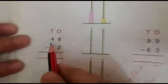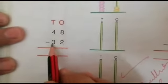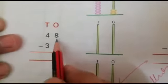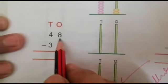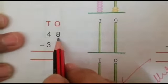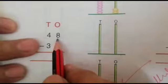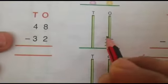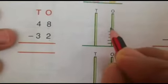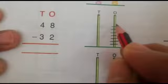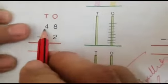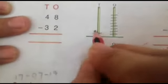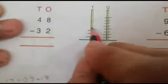Next 48 minus 32. First we will draw the beads which are in 1s place. 8. 1, 2, 3, 4, 5, 6, 7, 8. And how many 10s are there? 4. 1, 2, 3, 4.